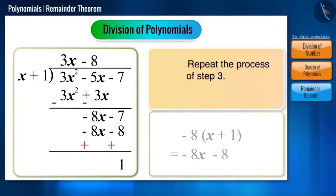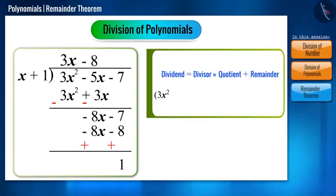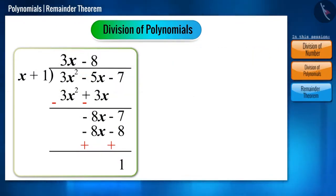We can represent this division in the form of 3x squared minus 5x minus 7 equals x plus 1 times 3x minus 8 plus 1. The division process will not be complete till we get the power of the remainder 1 less than that of the divisor.